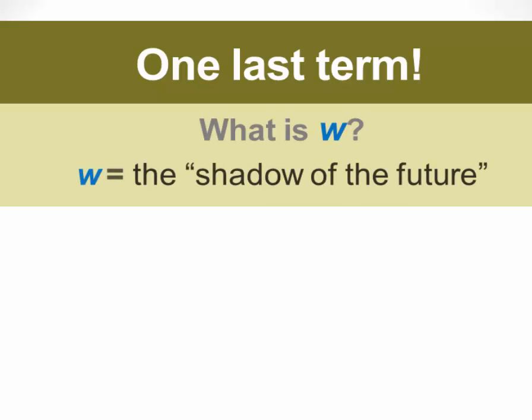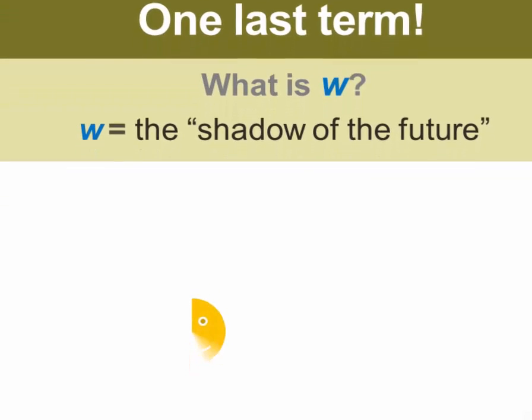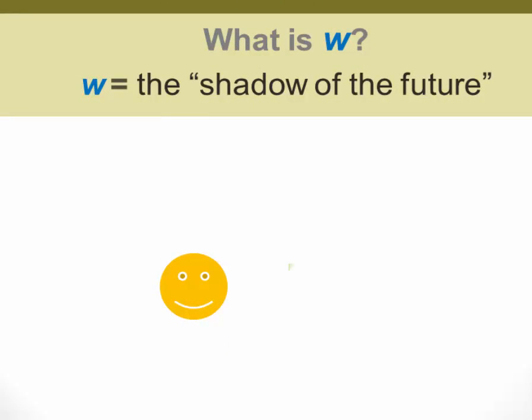So we have one last term to discuss, and this is the one that makes the difference. What is W? W is defined as the shadow of the future on our present activities. So if we have two agents, one is orange and one is blue, and orange has acted in such a manner as to benefit blue.